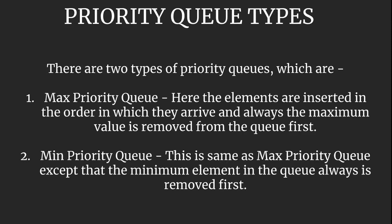We mainly have two types of priority queues: one is max priority queue, another is min priority queue. In max priority queue, the elements are inserted in the order in which they arrive, and always the maximum value is removed from the queue first. The min priority queue is the same as the max priority queue, but the minimum element in the queue is always removed first.